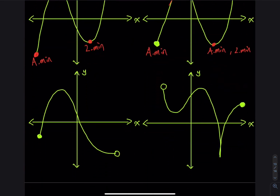Moving on to the third graph: the absolute maximum is the highest y, which is this point — the largest y in the closed interval. So this is absolute max and also local max. Where is the absolute minimum? You might say this is the lowest y, but that is not a solid circle. When x equals b, the function is undefined, so although that looks like an absolute minimum, it is not.